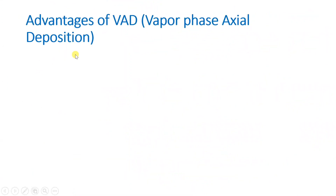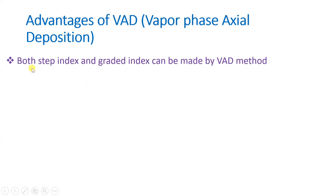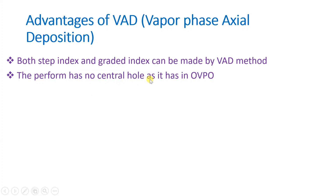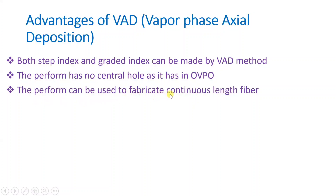There are a few advantages of the VAD method. First, both step-index and graded-index fiber can be made using this method. Second, the preform has no central hole, unlike in OVPO where a mandrel is used. Third, the preform can be used to fabricate a continuous length of fiber — this is the biggest advantage of VAD, making it suitable for long-length optical fiber production.